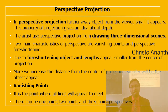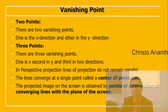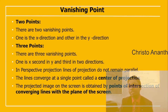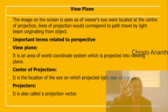The vanishing point is a point where all lines appear to meet. This can be a one-point, two-point, or three-point perspective. In two-point perspective, there are two vanishing points: one in the x-direction and another in the y-direction. In three-point perspective, a third vanishing point is added. In perspective projection, the lines of projection do not remain parallel — they converge at the center of projection.